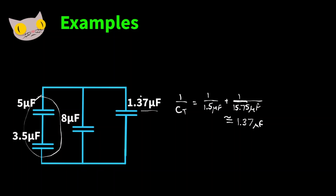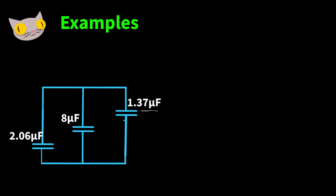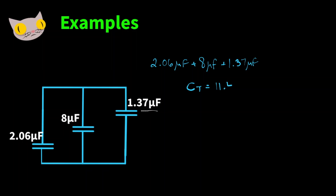Notice that the value we got is less than the value of the two capacitors we had before. Now let's find the equivalent capacitor for the other two series capacitors. We get 1 over CT equals 1 over 5 plus 1 over 3.5, which gives us about 2.06 microfarads. Now we're left with three capacitors in parallel, so all we have to do is add them up: 2.06 microfarads plus 8 plus 1.37 gives us a total capacitance of about 11.43 microfarads.